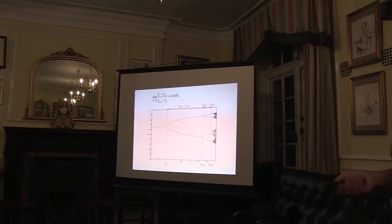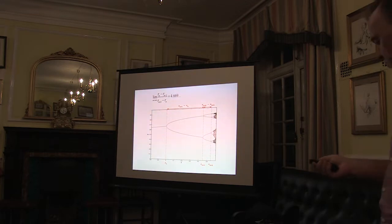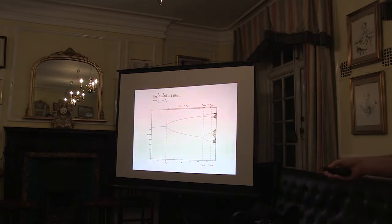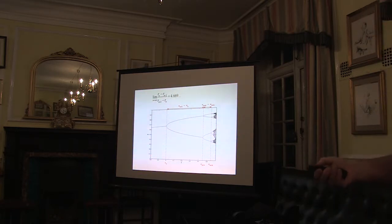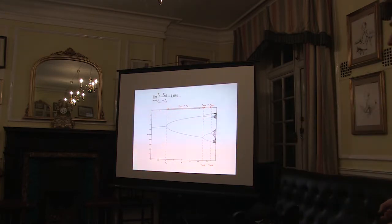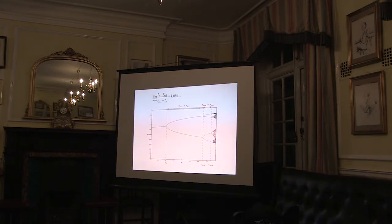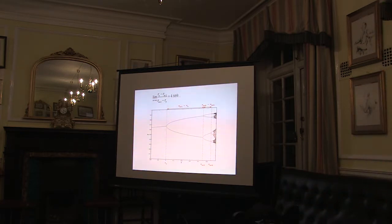I was at Imperial in 1978 working with Brian Spalding on turbulent flow — stretching and folding — trying to predict when a system became turbulent. It was still combustion and fluid flow work. Brian wanted to write a program and make money out of it, which I think he eventually did.